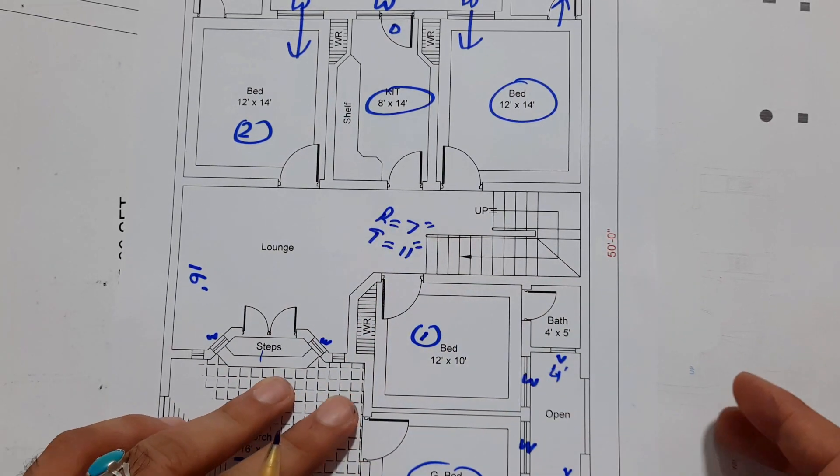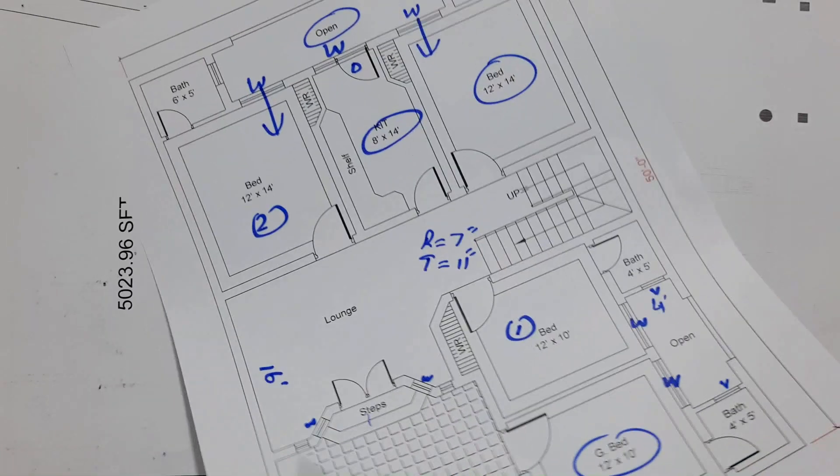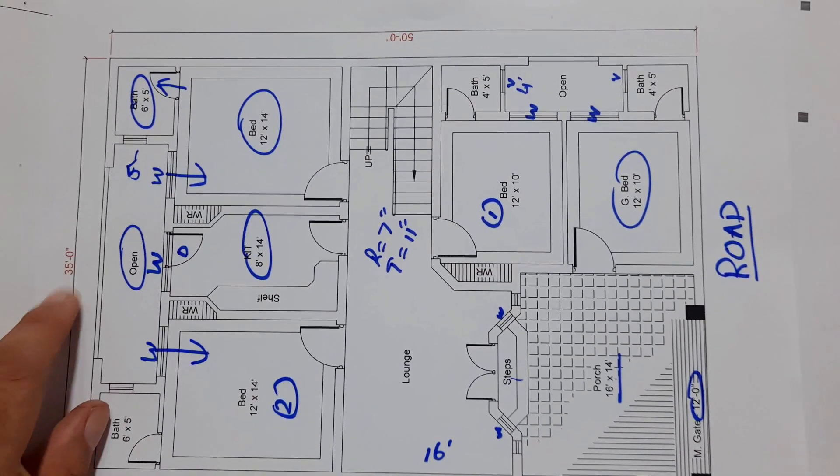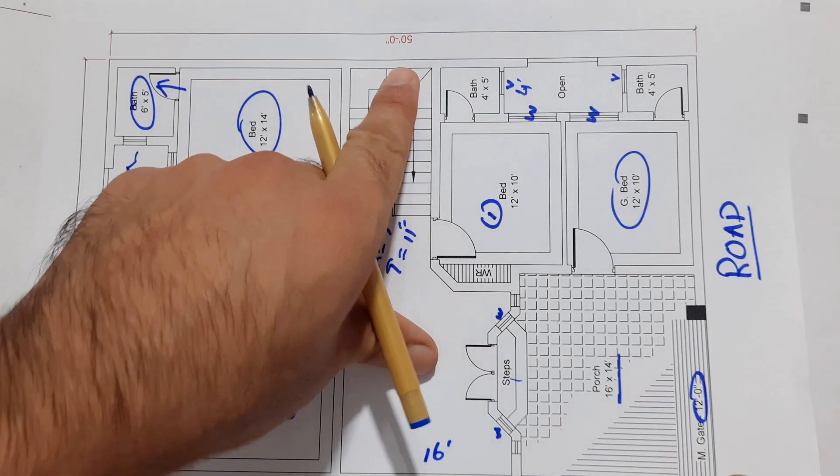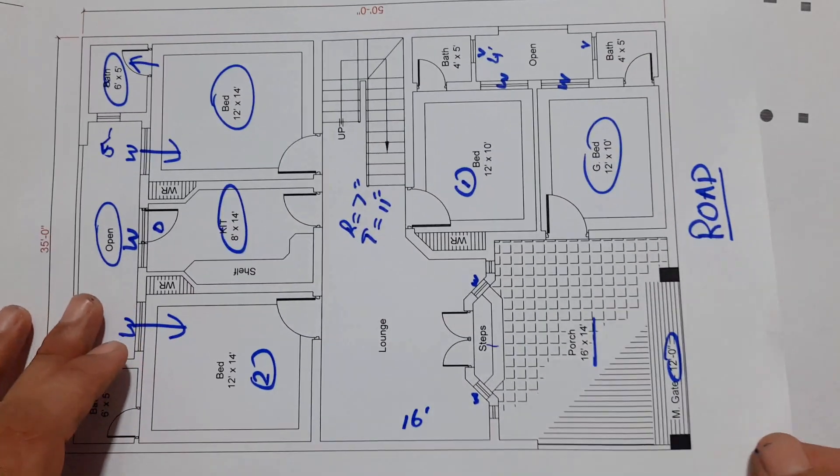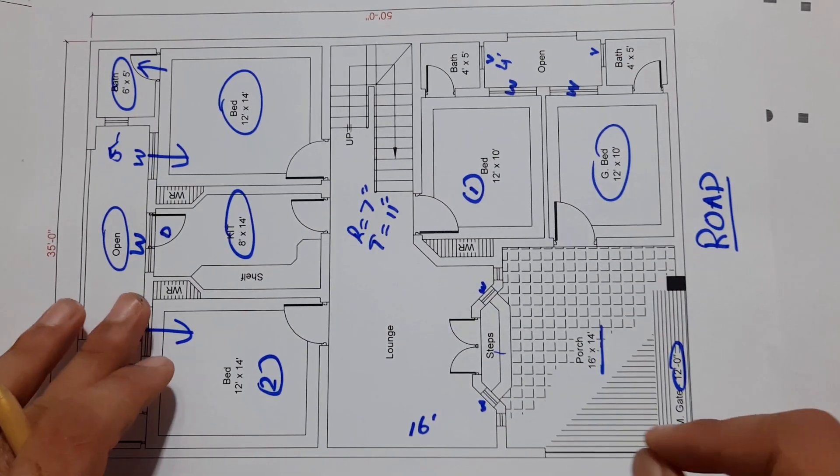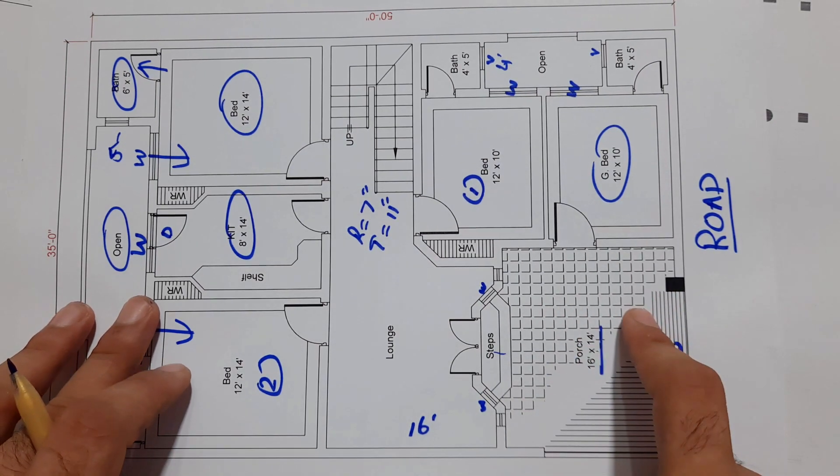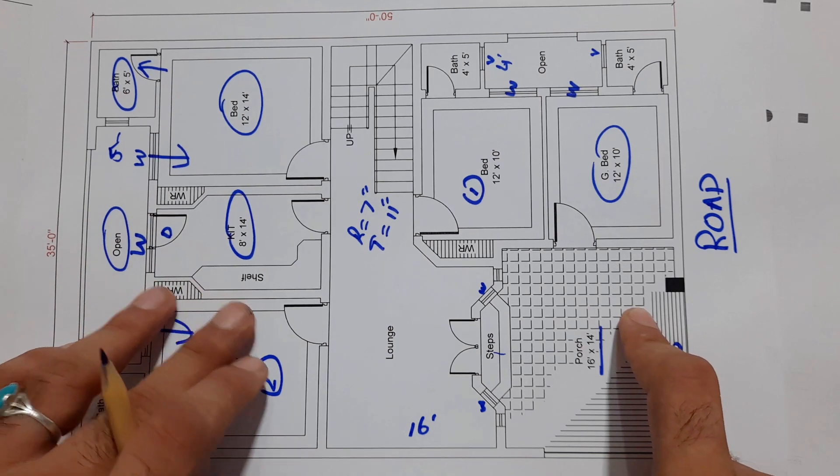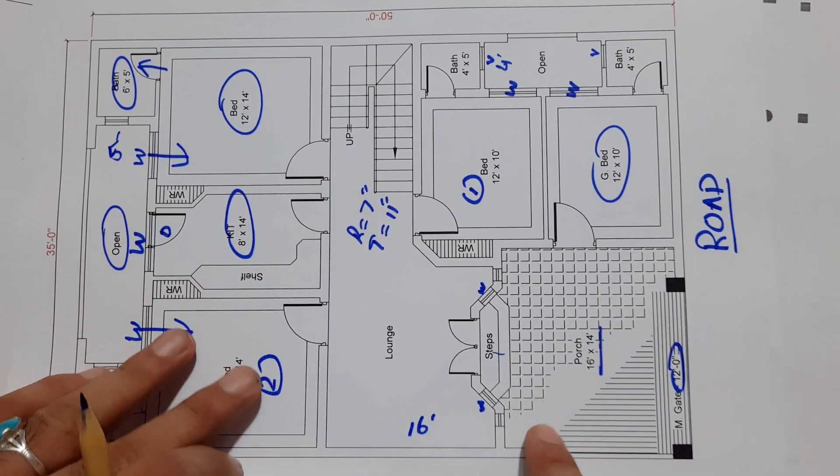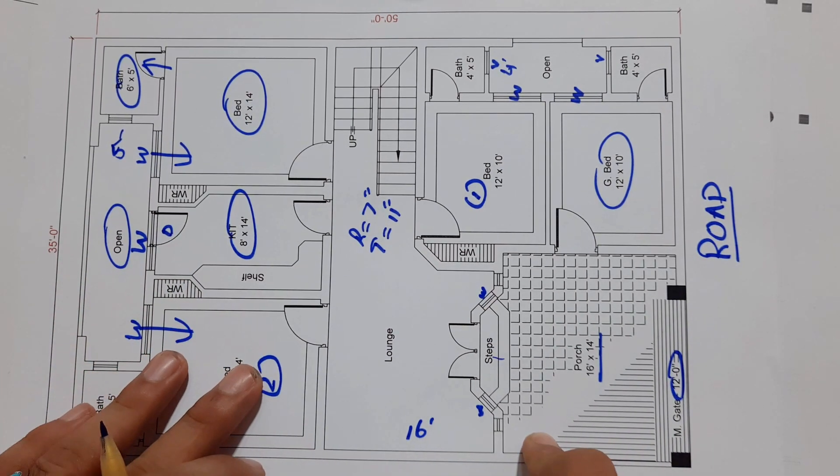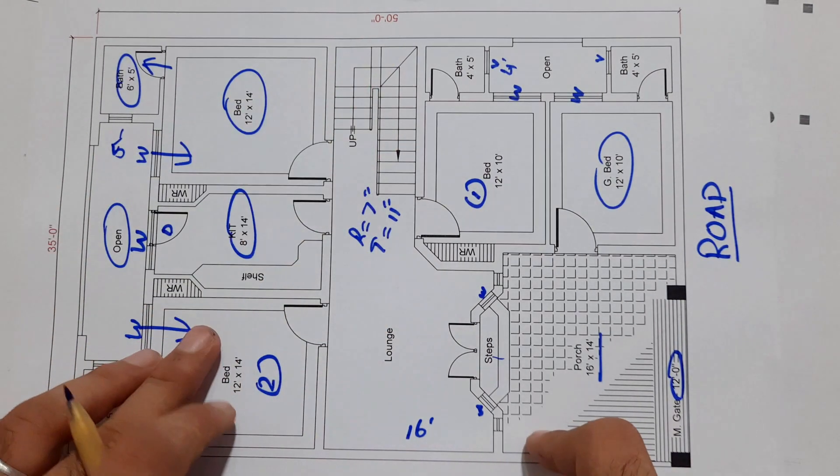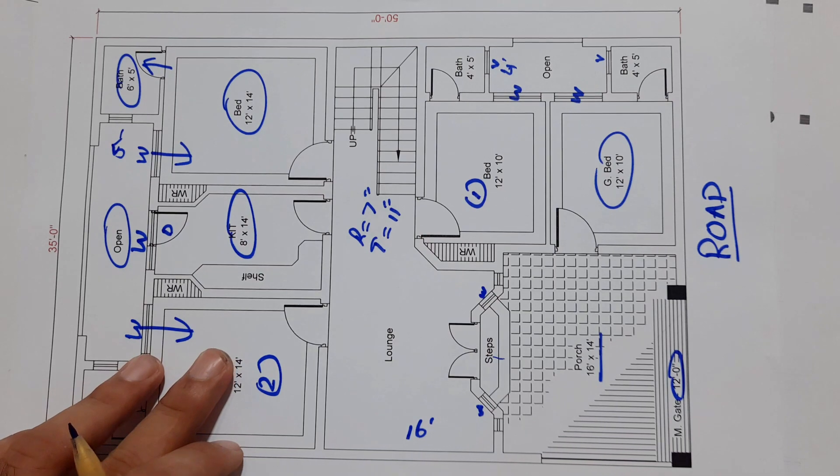So this is a best house plan in the dimensions of 35 by 50 feet. In the next video I will discuss its 3D design - how you can see this house plan from 360 degrees. I will also share its animation in 3D. So this is a short video in which I have discussed how to do best house planning in the dimensions of 35 by 50 feet. Thanks for watching, see you in next video, goodbye.